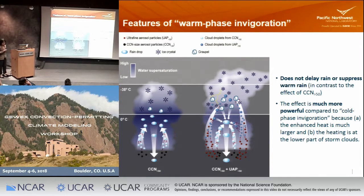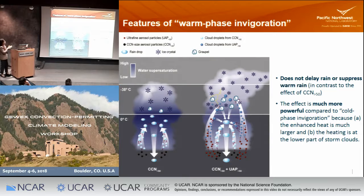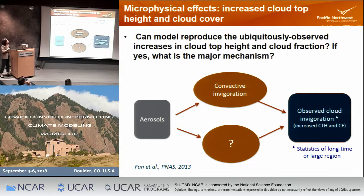I want to emphasize two key features of this mechanism. First, it does not delay the warm rain — this is in contrast with the CCN impact — because we need that rain formation to remove surface area and produce the highly supersaturated environment. Second, it is much more powerful compared to cold phase invigoration, because the enhanced latent heat is much larger and it is located at the bottom part of the lower cloud, not at the high level.